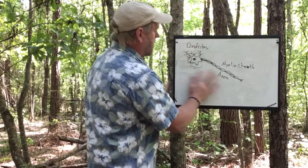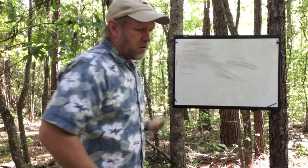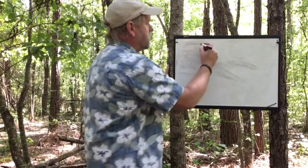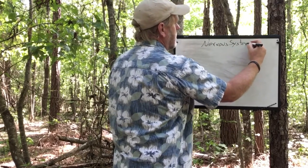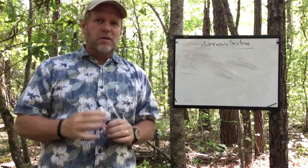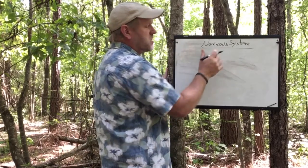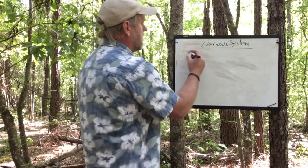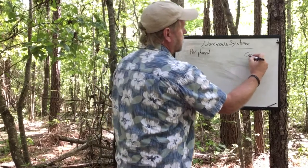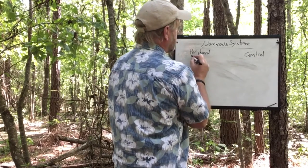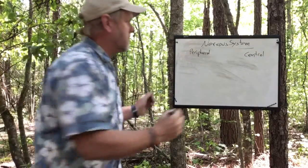Let's look at how these neurons are organized through the body — the organization of the nervous system. The nervous system is divided into two major areas: the peripheral nervous system and the central nervous system.